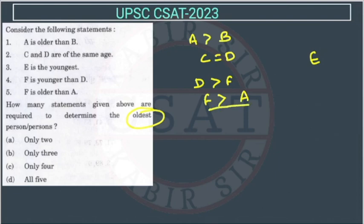Here in the last, then D is the oldest. Then C and D are of same age, then C will be here. E is the youngest, so we do not need E because E is youngest actually, but we need the oldest.